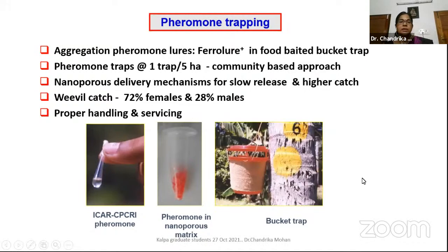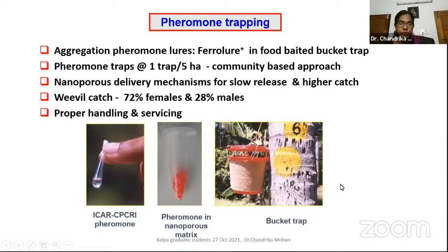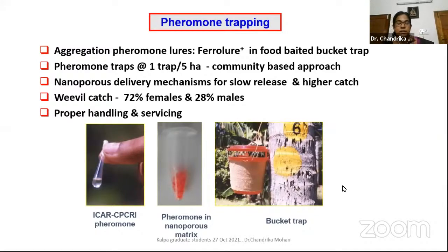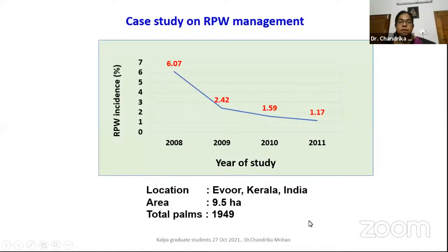There is also pheromone technology. The aggregation pheromone lure in food-baited bucket traps was used earlier. Now a nanoporous delivery matrix is available for slow release and long duration. CPCRI also started producing this pheromone. Proper servicing of the trap is very much essential, and this technology has to follow a community approach — single farmer approach is not very feasible as the pest is an active flyer. Using this technology, we could bring down infestation from 6.07% to 1.17% in a period of three years.